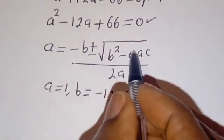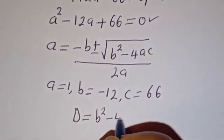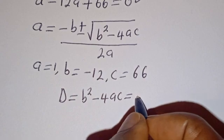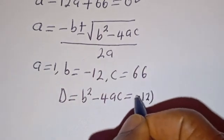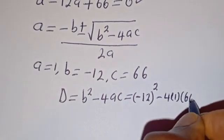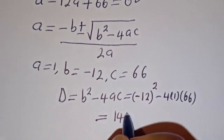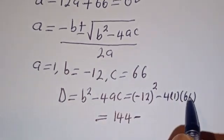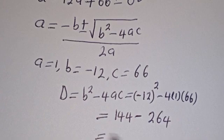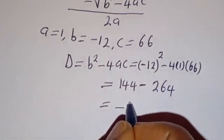Here we have B squared minus 4AC, which is the discriminant. D equals B squared minus 4AC. B is minus 12, so B squared is (minus 12) squared, which is 144. Then 4 multiplied by 1 multiplied by 66 is 264. So D equals 144 minus 264, which is minus 120.